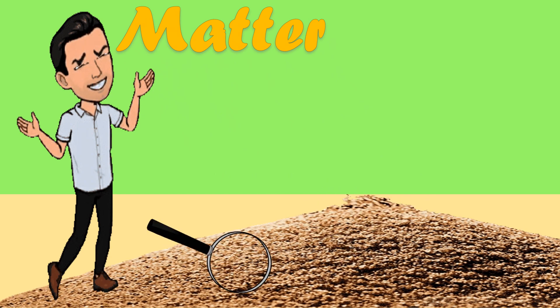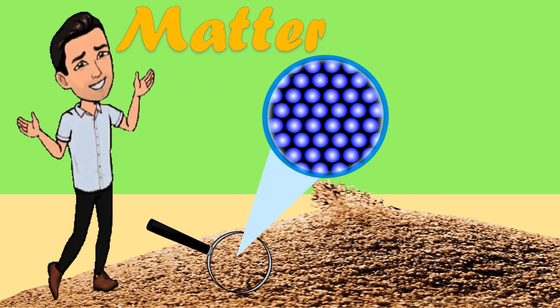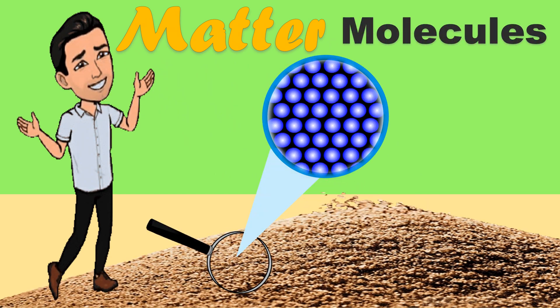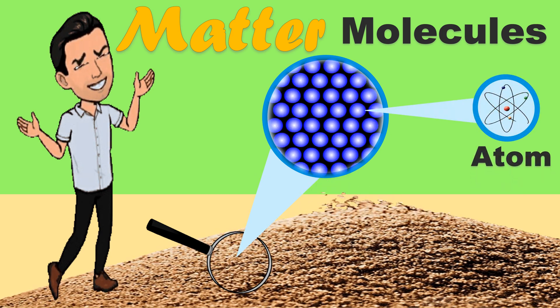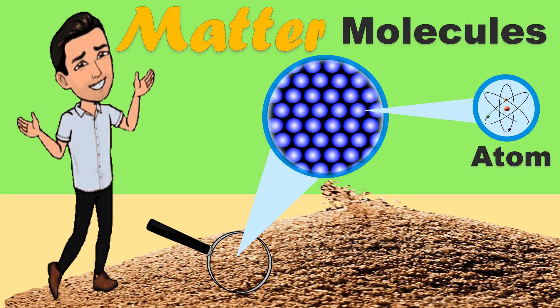Matter is made up of small particles known as molecules, and molecules are made up of atoms. Atom is the smallest unit of matter.